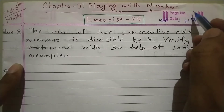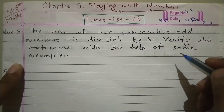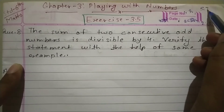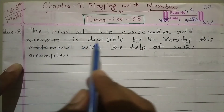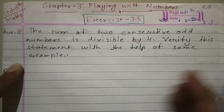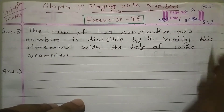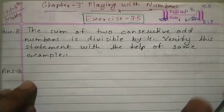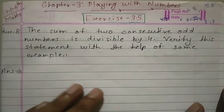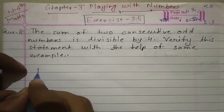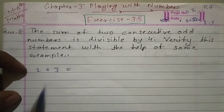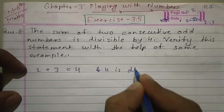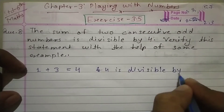First, if I take 1, then the second consecutive odd number is 3. Therefore, 1 plus 3 equals 4, and this 4 is divisible by 4. So we have taken one example. Similarly, for the second example, take 3 — the next consecutive odd number is 5. Then 3 plus 5 equals 8, and this 8 is divisible by 4.